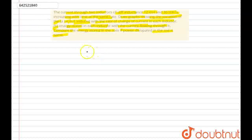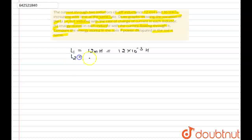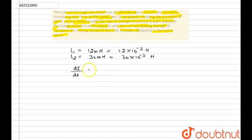Let's write down what's given in the question. The inductance of the first inductor is L1, which is 12 millihenry, or we can write 12 × 10⁻³. And L2 is 30 millihenry, or 30 × 10⁻³. The rate of change of current, dI/dt, is the same for both inductors.